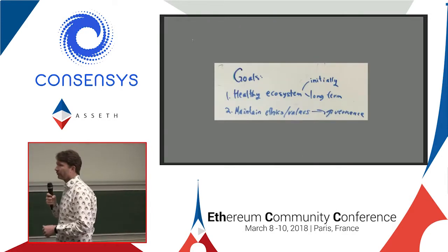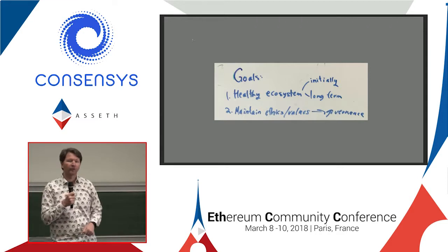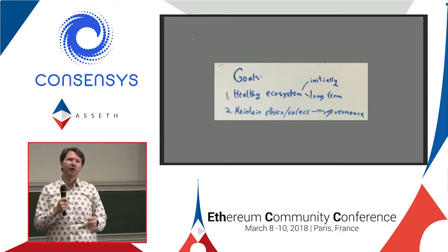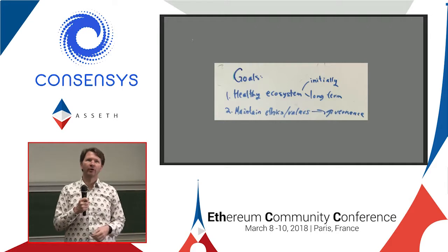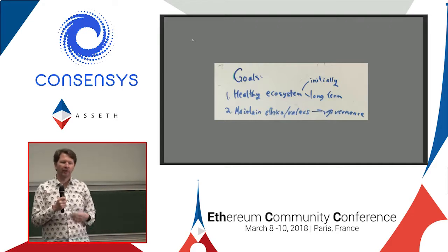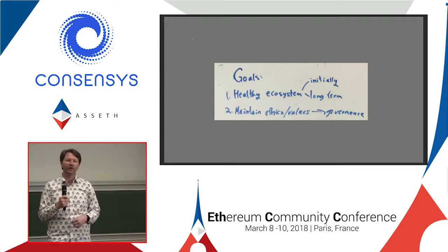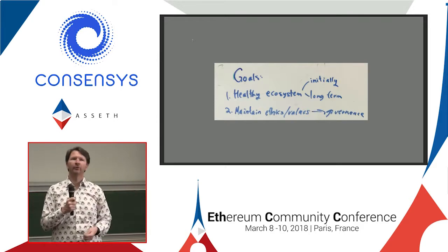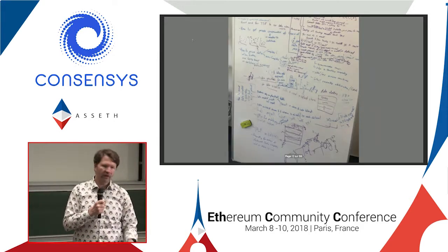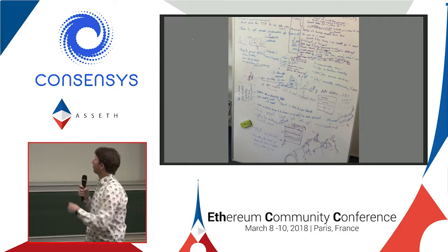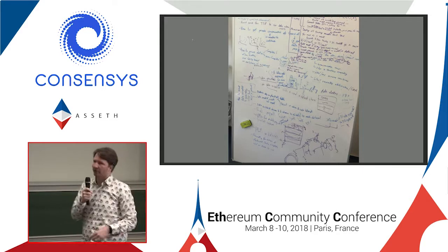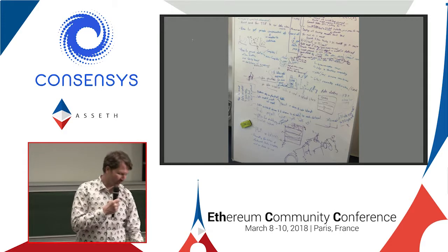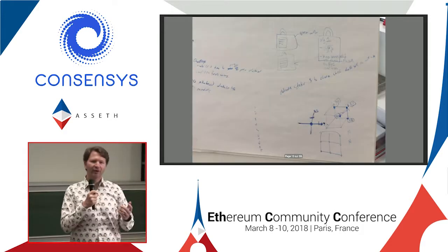Very early on, we wrote down goals — two of our main goals were a healthy ecosystem, not just initially but long term, and also to maintain ethics and values throughout. That was always absolutely critical to us. And we kept iterating — this is that whiteboard expanded. You don't have to try to read my writing; it's terrible. We were looking at multi-party compute and various pricing schemes with auctions, asking ourselves what if we had data that looked like Steemit or approached data the way Numerai does it.